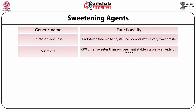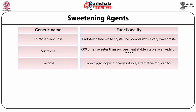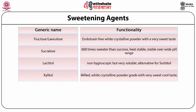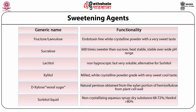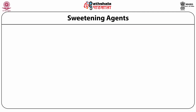Lactitol is non-hygroscopic but very soluble and can be used as an alternative to sorbitol. Xylitol is a white crystalline powder with a very sweet, cool taste. D-xylose, also known as wood sugar, is a natural pentose obtained from xylitol. Sorbitol liquid is a non-crystallizing aqueous syrup with a dry substance content of 68 to 72% and hexitol content greater than 80%.